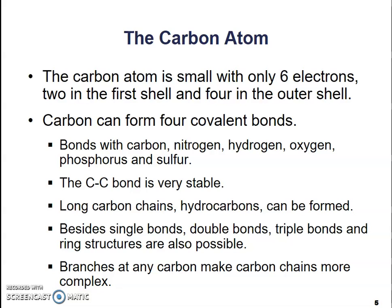A carbon-carbon bond is extremely stable and doesn't break easily. Long carbon chains called hydrocarbons can be formed because of those stable carbon-carbon bonds. They can form single bonds, sharing one pair of electrons; double bonds, sharing two pairs of electrons; triple bonds, sharing three pairs of electrons; and they can form ring structures. Branches at any carbon make carbon chains more complex.